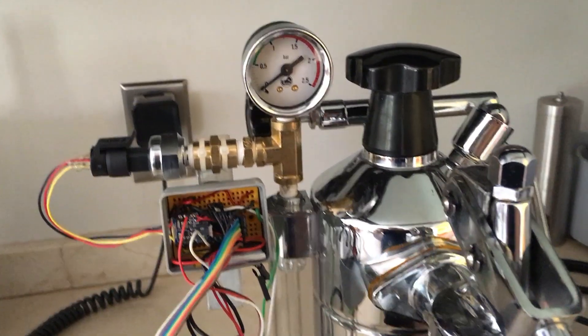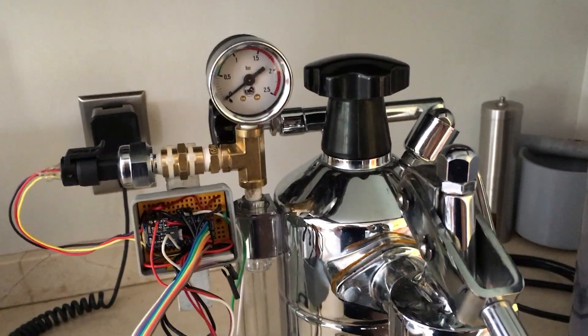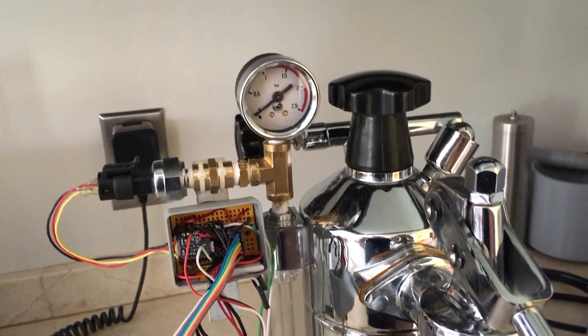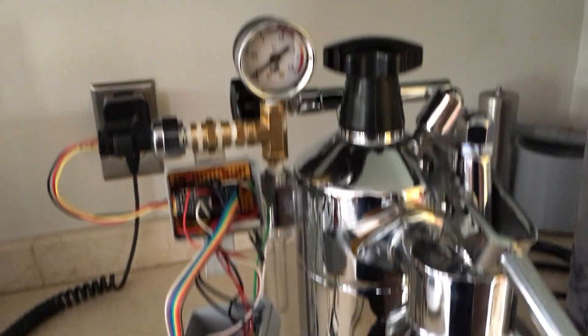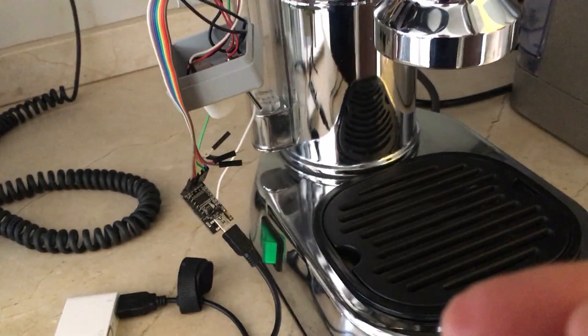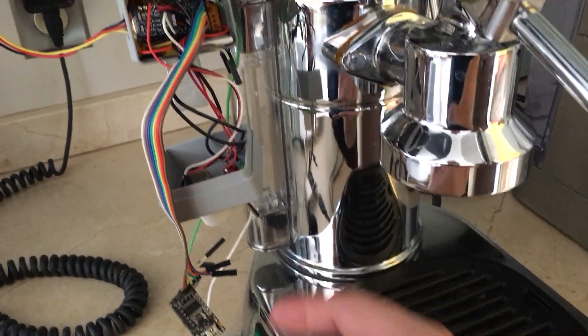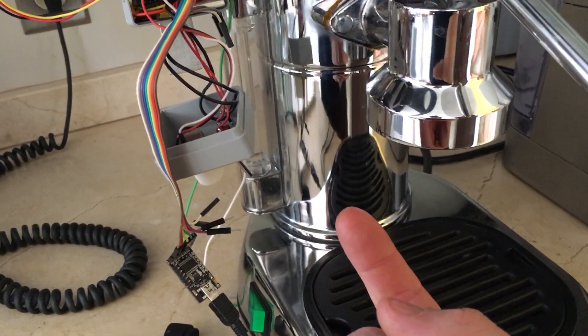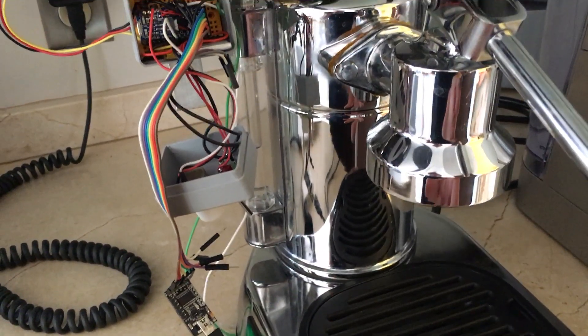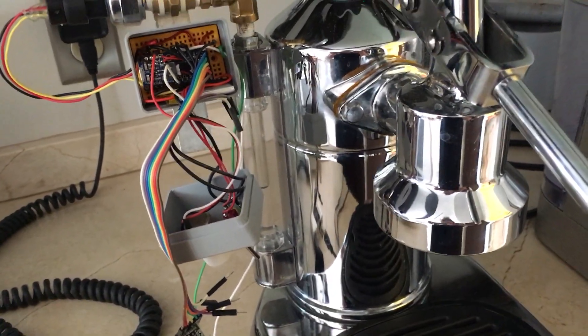But importantly for this project I didn't want to make any permanent modifications to the machine because I know someone in the past did a PID controller where they put a thermometer actually through the bottom of the boiler, but that requires putting a hole in the boiler and I wasn't willing to potentially damage any of the machine.